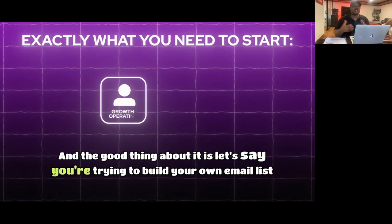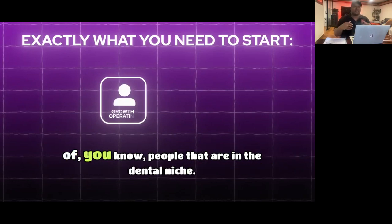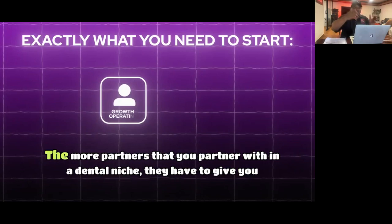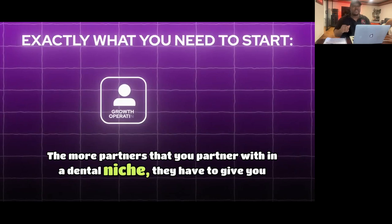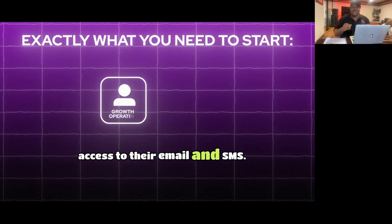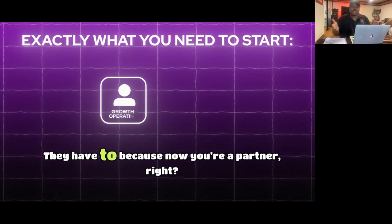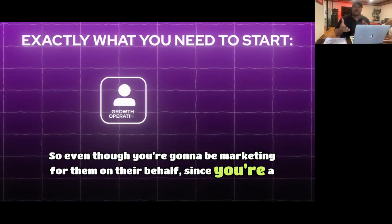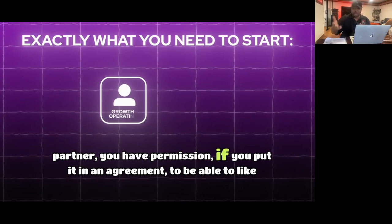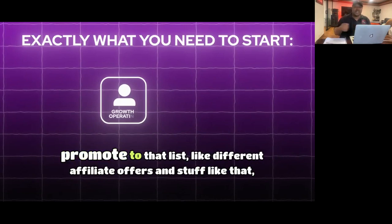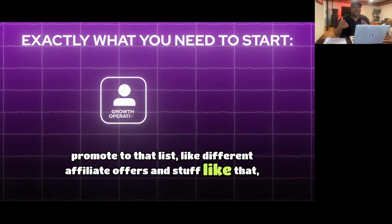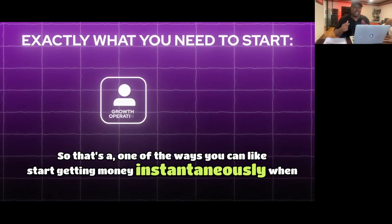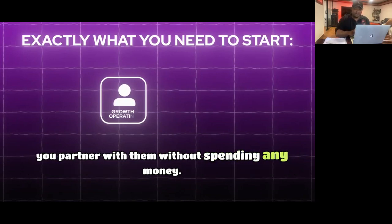And here's the good thing: let's say you're trying to build your own email list of people in the dental niche so you can sell them affiliate offers later. The more partners you work with in that niche, they have to give you access to their email and SMS list — because now you're a partner. Since you're a partner, you have permission, if written in an agreement, to promote to that list with different affiliate offers and even CPA offers. That's one way to start generating money immediately without spending anything.